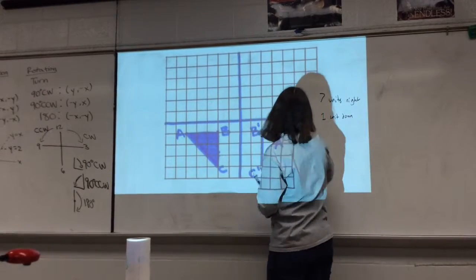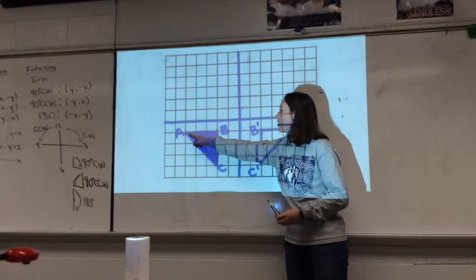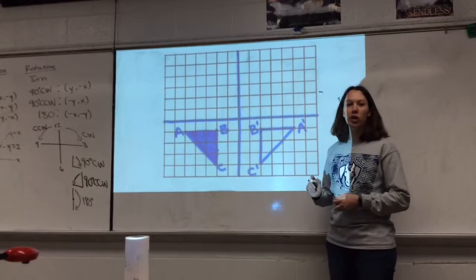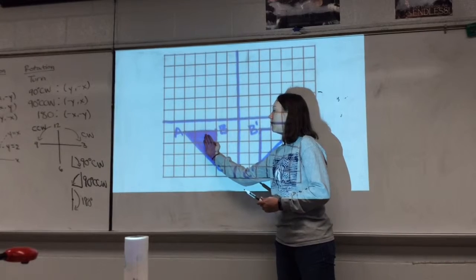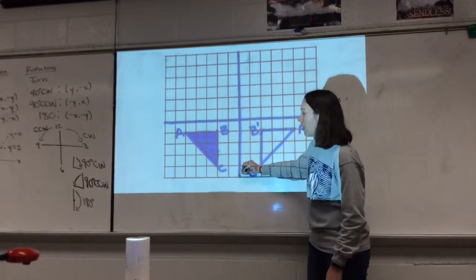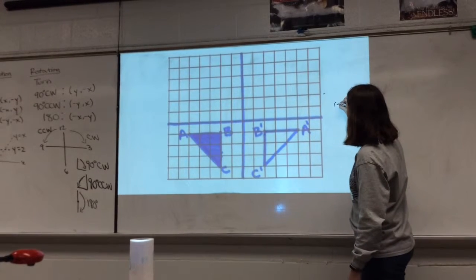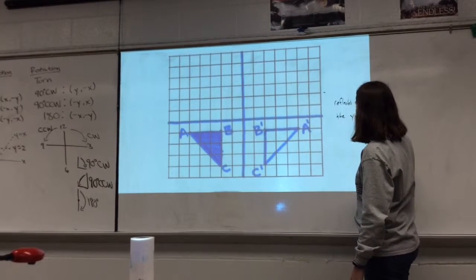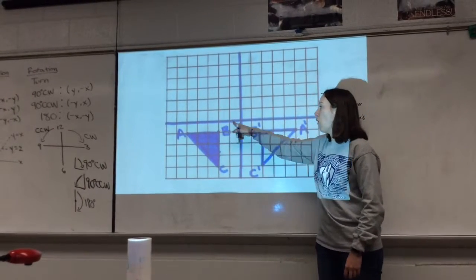For reflection, we're going to once again start with our pre-image, which is going to be regular letters A, B, C, and move to our image A prime, B prime, C prime. For your reflection, all we're looking at is what did it flip over. If I start with this shape, I'm going to imagine it flipping to get to the second one. In this case, it's going to be flipping over this line right here, which is your Y-axis. Most of our problems, your reflection will be either over the Y-axis or over your X-axis.